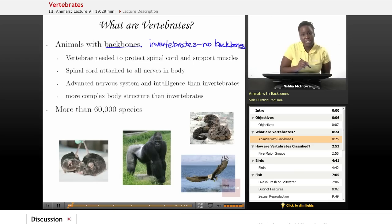Vertebrates get their name because they have this backbone that's made up of different bones, and we call these different bones that make up the spine vertebrae. And these vertebrae are needed to protect what's inside of the vertebrae, the spinal cord.